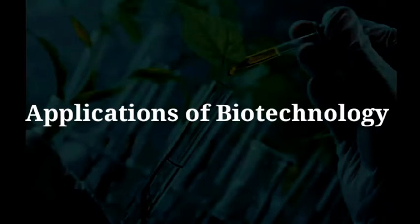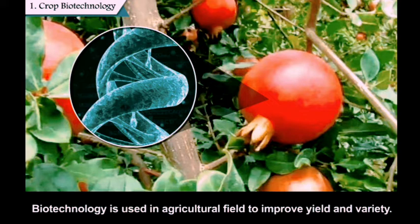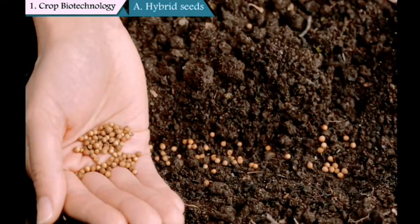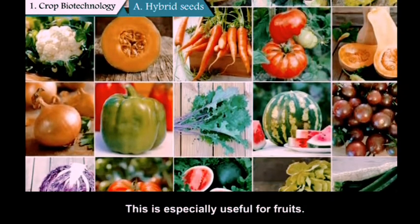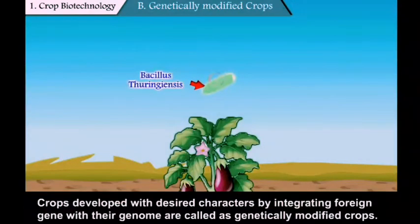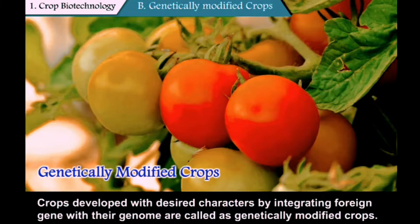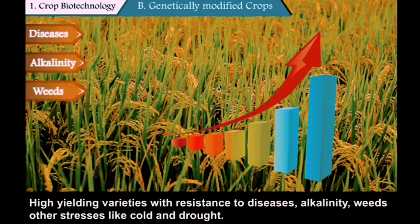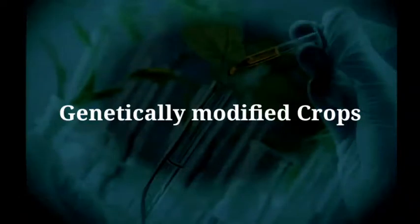Applications of biotechnology — Crop biotechnology: biotechnology is used in agriculture to improve yield and variety. In hybrid seed production, genes of two different crops are recombined to form hybrid seeds of various crops, especially used for fruits. Genetically modified (GM) crops are produced by integrating foreign genes into the genome of a crop to develop desired characters, such as high yield varieties with resistance to diseases, alkalinity, weeds, and other stresses like cold and drought.